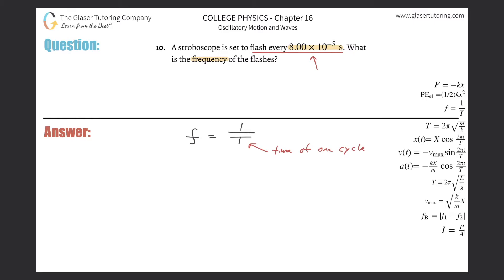A flash sounds like it could be considered a cycle or an oscillation or whatever. So they basically told us the period. So if they told us the period and we have to find the frequency, we can simply use this formula, right?